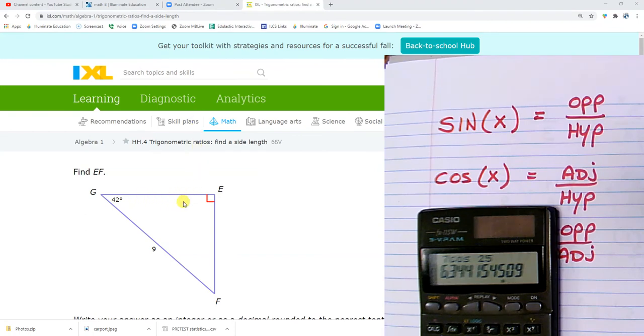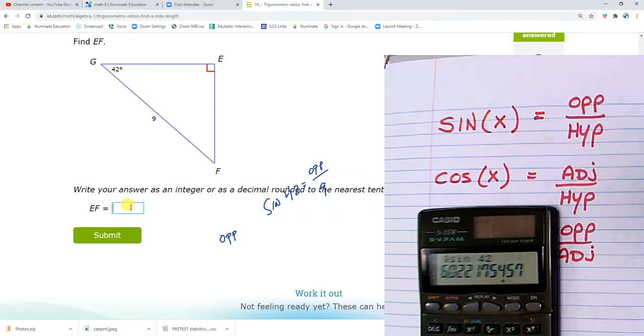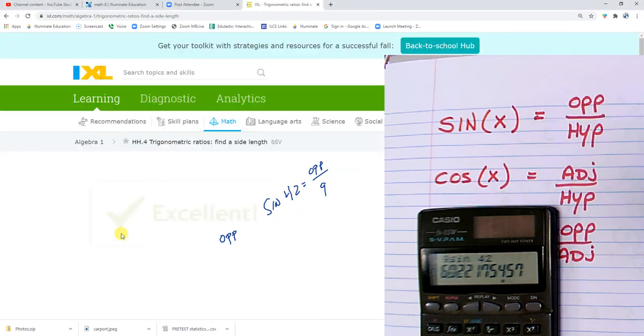I am looking for EF. I'm looking for EF, which is the opposite side. So I'm going to go with the sine. Sine of 42 equals the opposite side, which is what I'm looking for, over the hypotenuse, which is 9. So 9 sine of 42, 6.0. Or just 6. Is it going to accept it as just a 6? It did. Good.